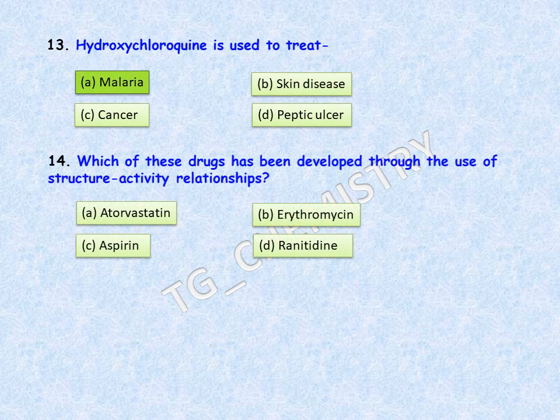Next question: which of the following drugs has been developed through the use of structure-activity relationships (SAR)? Options are: A, atorvastatin; B, erythromycin; C, aspirin; D, ranitidine. The correct answer is option A, atorvastatin.